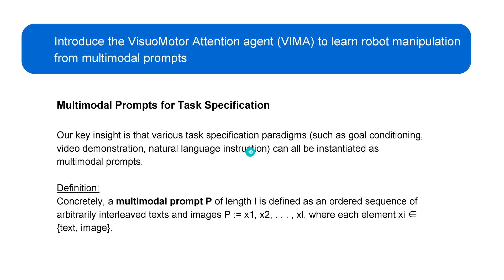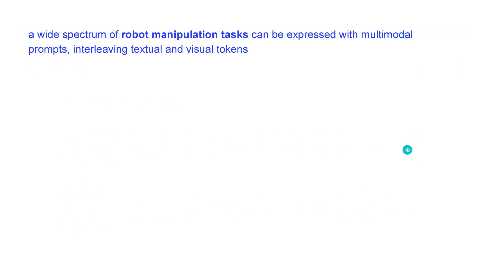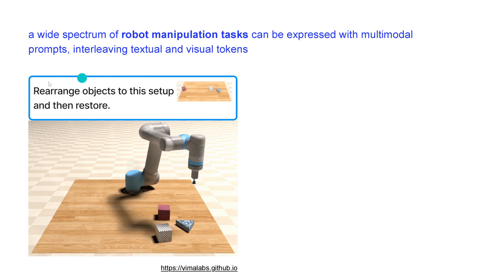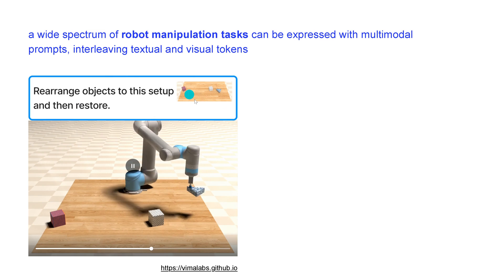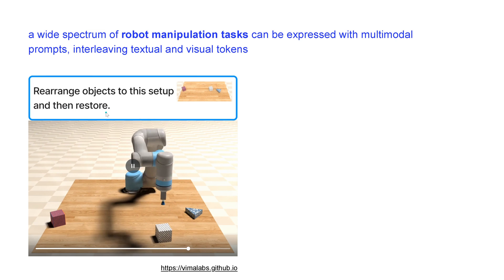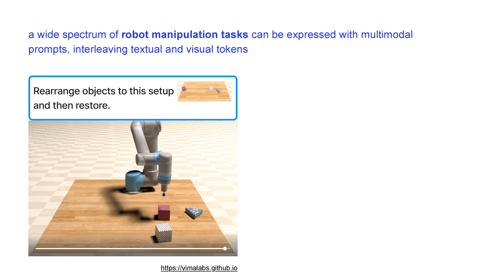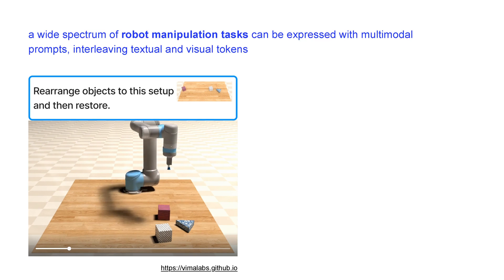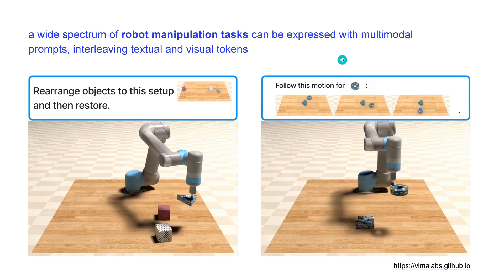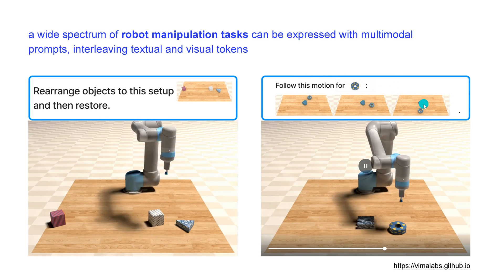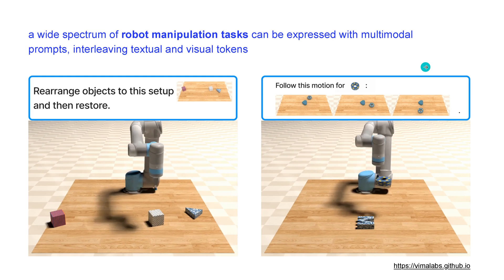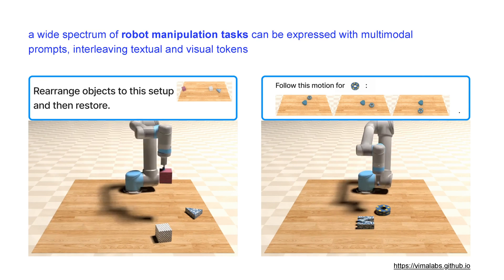Since we are in a university context, we have a clear definition: a multi-modal prompt is a sequence of arbitrarily interleaved text and images. A simple example is shown in the blue box — 'rearrange the objects to this setup,' followed by an image, then 'restore the state.' You can see our robot arm perfectly executing the task given in the prompt, and if the prompt says 'follow the motion' for a sequence of images, the robot arm exactly performs the desired task.